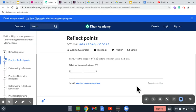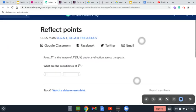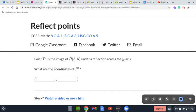Point P is the image of P(3,5) under a reflection across the y-axis. So in here, we have the y-axis. When we have the y-axis, we have to change the x-axis sign.